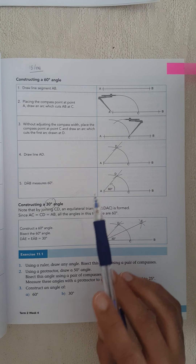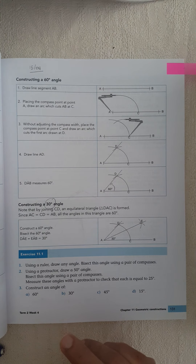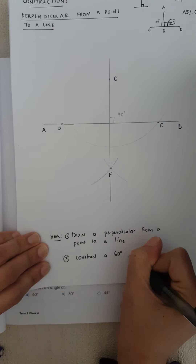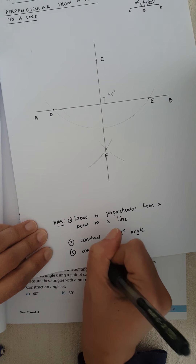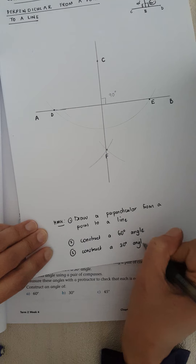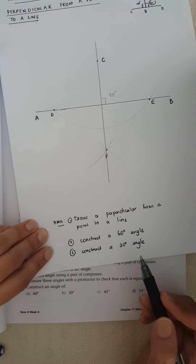Your homework for this part: number one is draw a perpendicular from a point — that was number one. Number two is construct a 60 degree angle. And number three is construct a 30 degree angle. When it tells you to construct a 30 degree angle, you use that drawing and bisect it into 30 degrees.